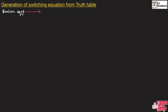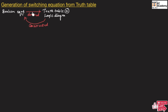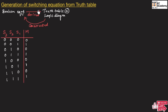Boolean equations can be directly derived from a truth table or logic diagram. Similarly, a truth table or logic diagram can be constructed using Boolean equations. To understand this, let us consider a truth table.